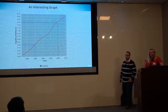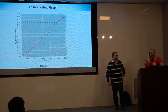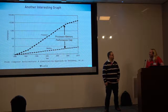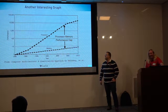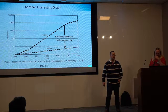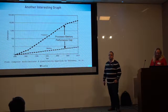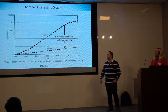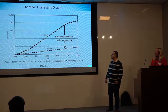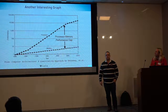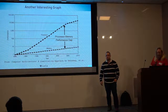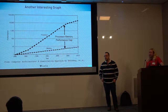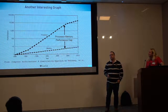However, things are not quite that rosy. Although processor performance has increased quite rapidly, the performance of memory has not kept the same pace — its growth in terms of performance is a lot shallower. When something is running slow, we normally put a cache in front of it, but that has some problems we'll discuss.